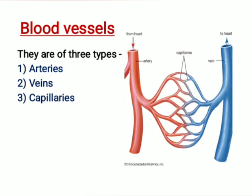Blood vessels are thin tube-like structures that start from the heart and run through the entire body, forming a network. These are of three types: arteries, veins, and capillaries.